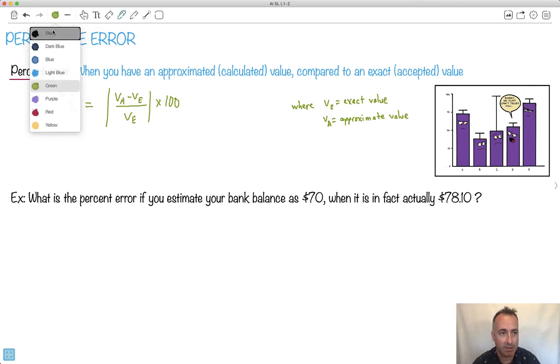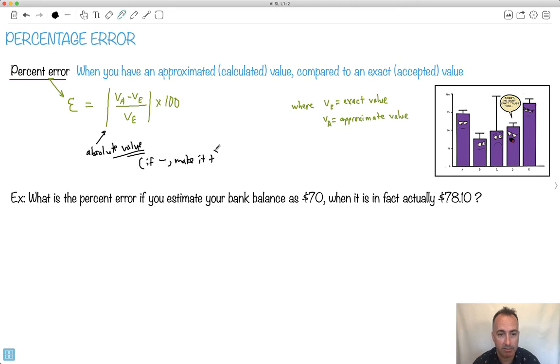Now what does this mean? What is this one here? That means absolute value. That's what that means. That means if it's negative, make it positive. That's just what it means. So if it's negative, just make it positive. If it's positive, leave it positive.